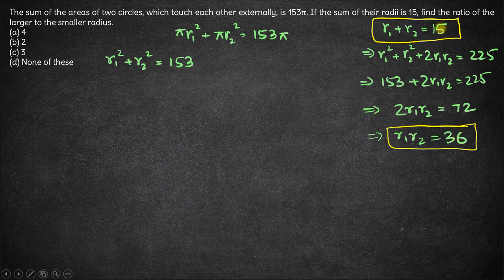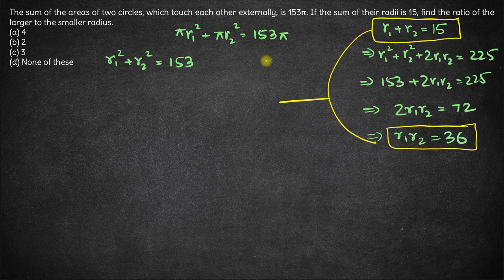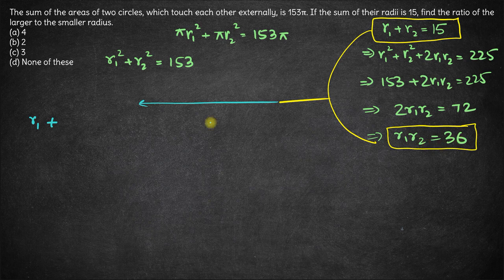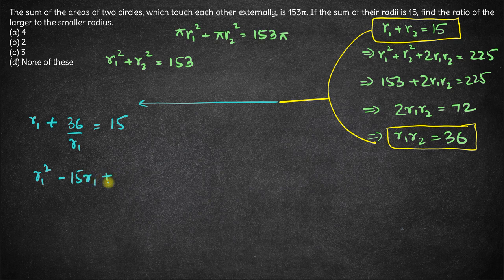But if you are not able to figure that out, what we need to do is solve these two by forming a quadratic equation. How do we form a quadratic equation? We have r1 plus, instead of r2 here, we can substitute r2 with 36 by r1, which is equal to 15. So we have r1² minus 15r1 plus 36 is 0.